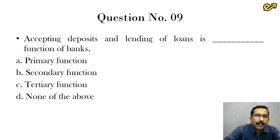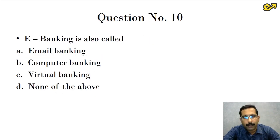Question number nine, accepting deposits and lending of loans is the dash function of banks. This is the most elementary function that every bank has to do. So the answer is a straightforward answer. It is option A, which is primary function of the bank.